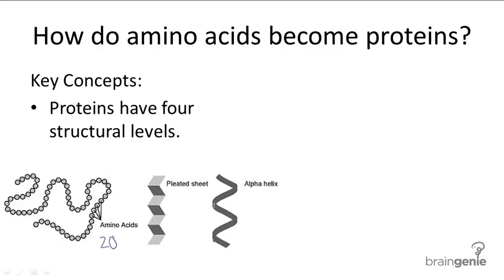The secondary level of structure involves small folds in the chain, induced by the interactions between functional groups of local neighbors. The two main secondary structures are called the alpha helix and the beta pleated sheet. When the secondary structures are done being folded, the polypeptide begins to look something like a conglomeration of alpha helices and beta pleated sheets.